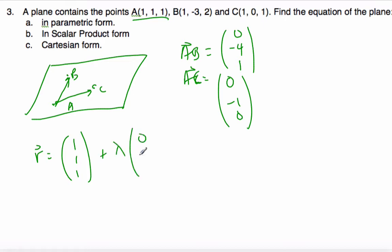Plus, we'll say, lambda, 0, negative 4, 1, plus, let's call mu, 0, minus 1, 0. And these parameters can be any real number.